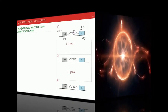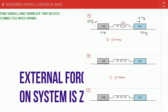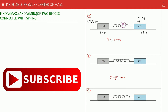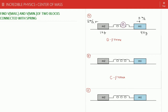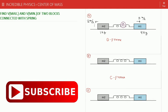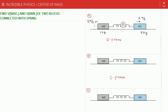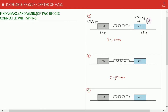Welcome to Incredible Physics. Today we will discuss a special case of center of mass in which we are given two blocks m1 and m2 connected to a spring. Two velocities are provided in any direction and we have to find the maximum and minimum velocities obtained by these blocks. We have taken two types of frames: G frame (ground frame) and C frame (center of mass frame). For solving these problems, we draw four diagrams A, B, C, D. In diagram A, m1 is 4 kg and m2 is 1 kg; m1 has velocity 3 m/s rightward and m2 has velocity 2 m/s leftward.